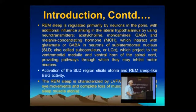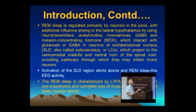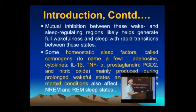Activation of the SLD region assists atonia and REM sleep-like EEG activity. REM sleep is also known as paradoxical sleep, because its EEG has characteristics of low voltage, fast activity amplitudes — similar to the wakeful state.